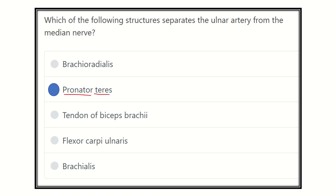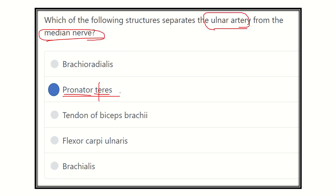The pronator teres is responsible for pronation of the forearm, and it separates the median nerve from the ulnar artery. This is a very important point: the ulnar artery is separated from the median nerve by the pronator teres. Thank you all.